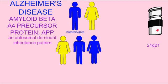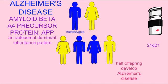Thus, in this example, a similar phenotype can be produced by mutations in the enzyme and in the molecule with which it reacts.